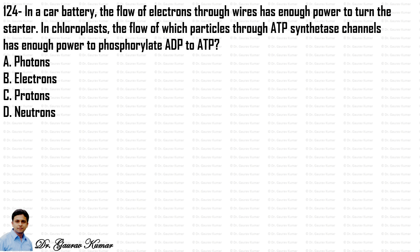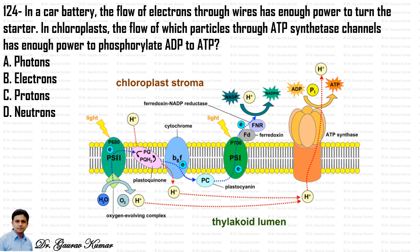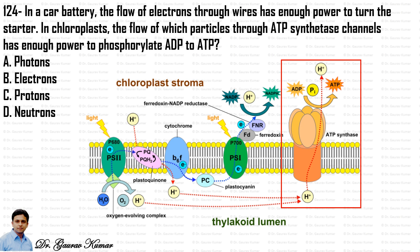Next question: in a car battery the flow of electrons through wires has enough power to turn the starter. In chloroplasts, the flow of which particles through ATP synthase channels has enough power to phosphorylate ADP to ATP? The figure shows the ATP synthase channel through which a proton moves, causing the conversion of ADP to ATP. Hence the answer is protons.